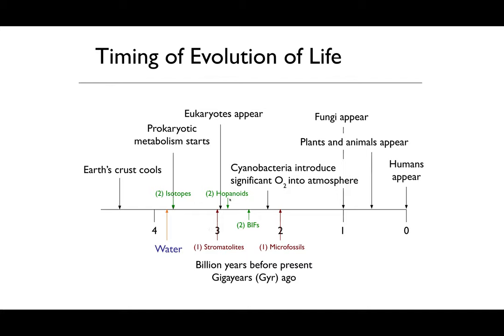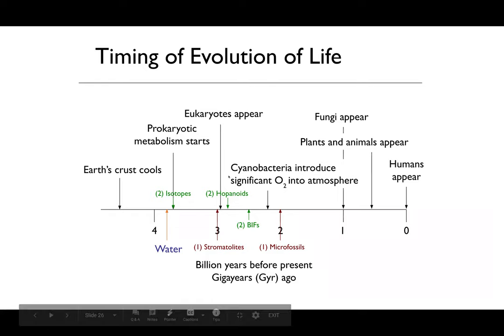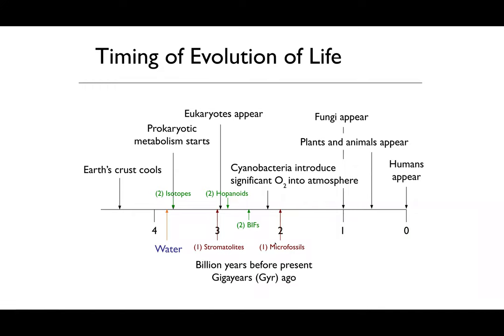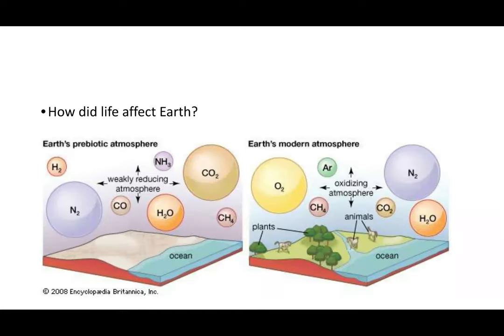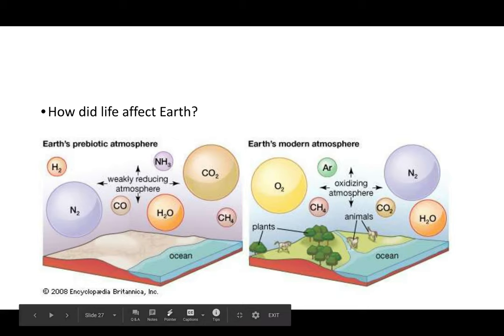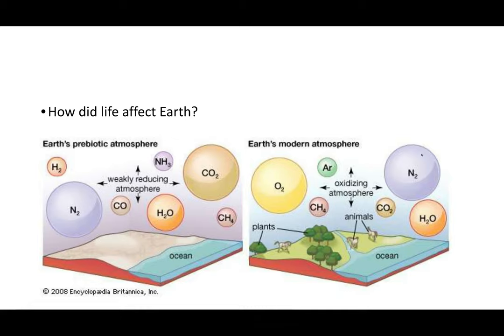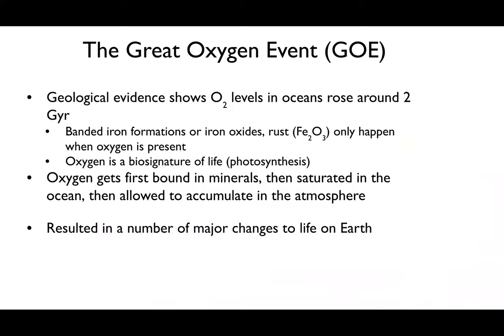Life is old. You might be thinking: life evolved, cool—but how does life affect Earth? Early life dramatically changed our atmosphere. We have more oxygen, less CO2, less carbon monoxide, less methane, and no hydrogen compared to the early atmosphere. In particular, the most important part is what we call the Great Oxygenation Event, or GOE—there is abundant geological evidence showing a rapid increase in oxygen levels around 2 billion years ago.